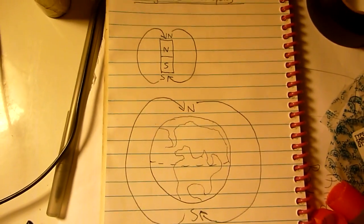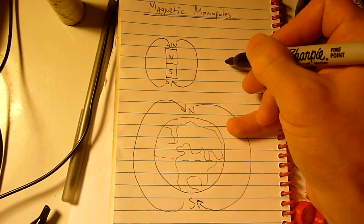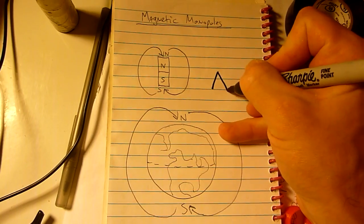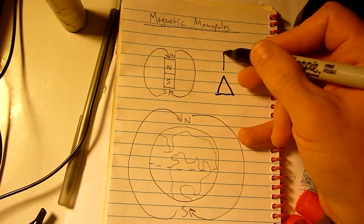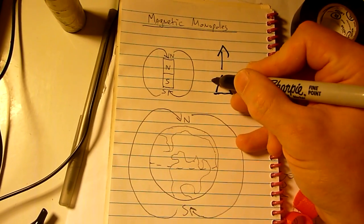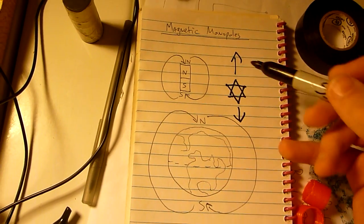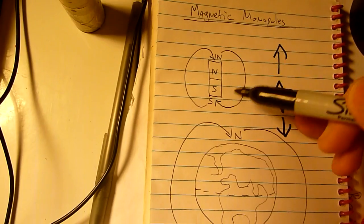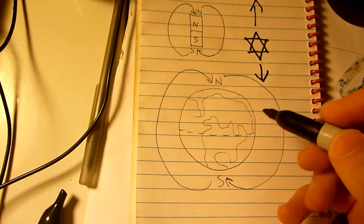I believe in the past the people knew about these monopoles. So, let's look at some of the symbols from the past. We have the Star of David, which is composed out of two triangles. So, we have a triangle pointed up and a triangle pointed down. So, this is similar to the way the monopoles move around the magnet and move around the Earth.